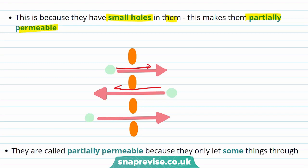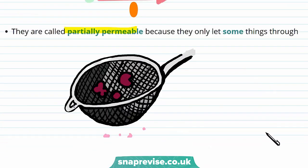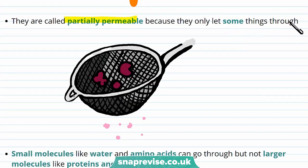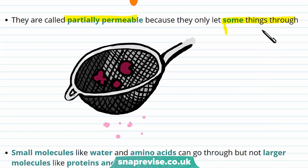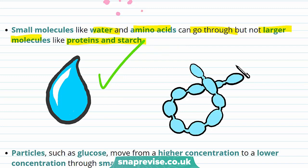A really important thing to note is that cell membranes are called partially permeable because they only let some things through. You can think of this like a sieve — the sieve lets smaller molecules through but keeps larger molecules in. So small molecules like water and amino acids can pass through the membrane, but larger molecules like proteins and starch cannot.